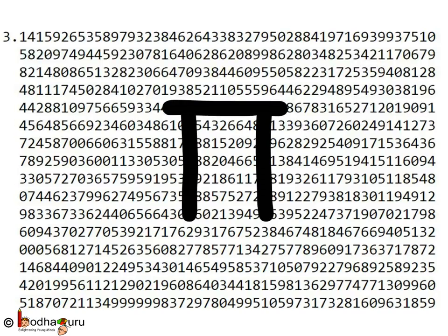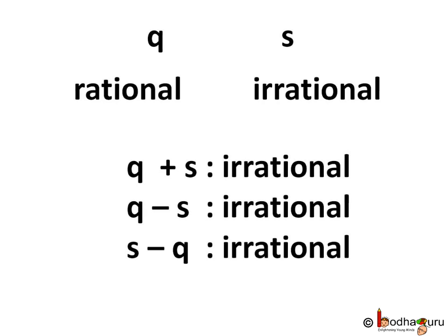Same way, if we try to subtract a whole number or a decimal from square root of 2, square root of 3, or pi, the subtraction would go on and on — meaning we get another non-terminating, non-recurring decimal. So if q is a rational number and s is an irrational number, then q plus s is irrational, q minus s is irrational, and s minus q is also irrational.